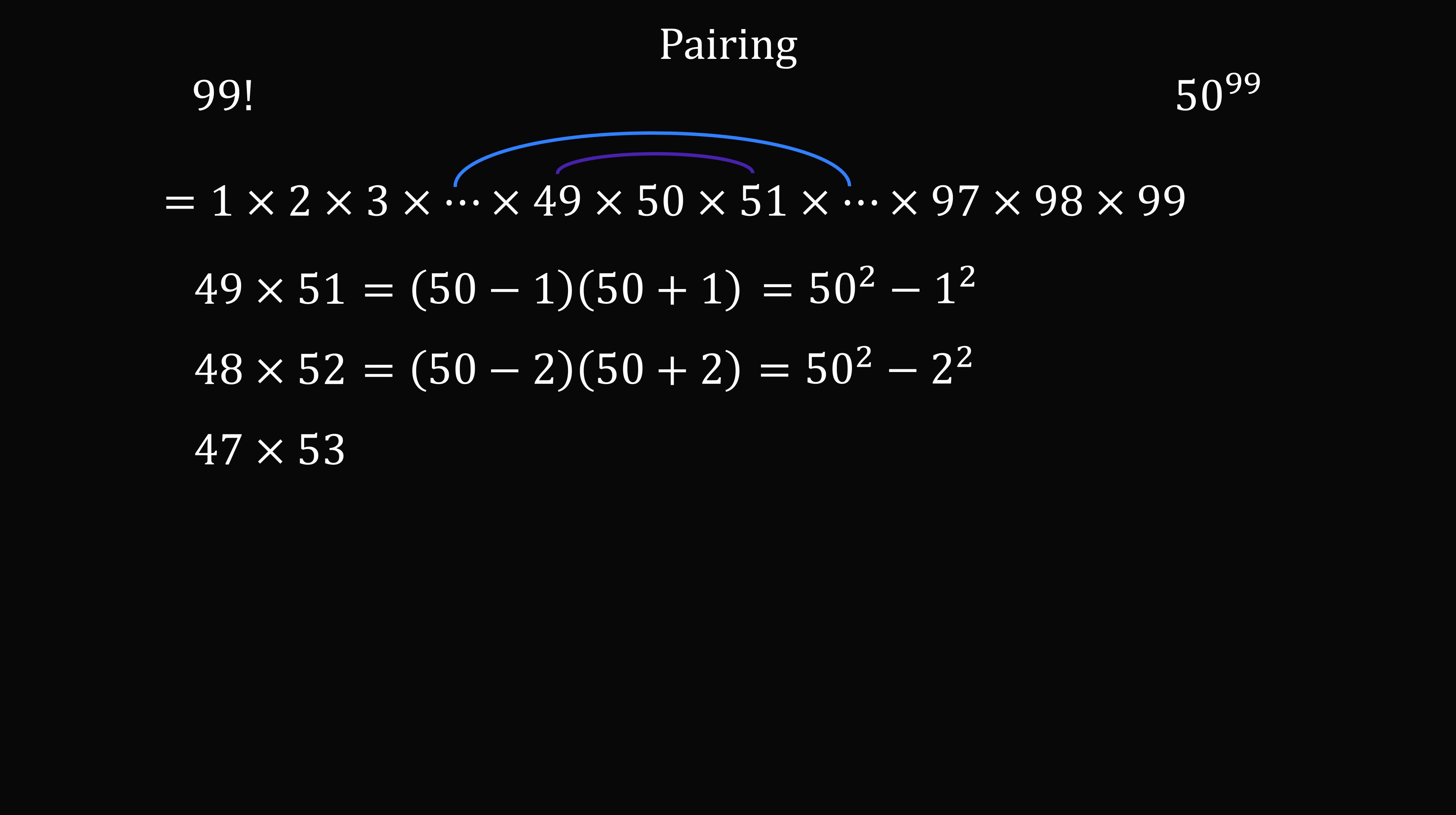We continue pairing, so we have 47 times 53. This will be 50 minus 3 multiplied by 50 plus 3, and that's equal to 50 squared minus 3 squared.